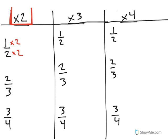So, 1 half is actually equal to 2 fourths. That's an equivalent fraction. 2 thirds, when we multiply 2 times 2 in the numerator is 4, 3 times 2 in the denominator is 6. 2 thirds and 4 sixths are equivalent fractions, and so on and so forth.